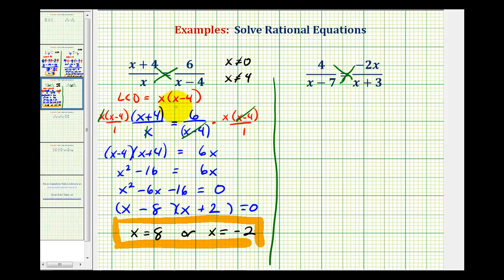But let's just review how we would do it if we had additional terms in our equation. We would first find the least common denominator, which would be the quantity x minus 7 times the quantity x plus 3.